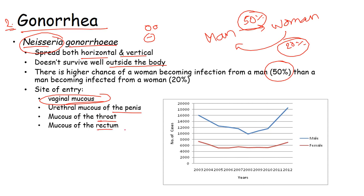The sites of entry are the vaginal mucosa and associated tissues, the urethral mucosa of the penis, the mucosa of the throat, and the mucosa of the rectum — all regions used during different sexual acts, which is why they are related to sexually transmitted diseases.